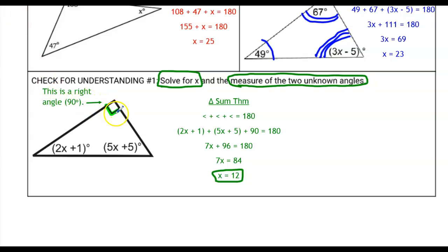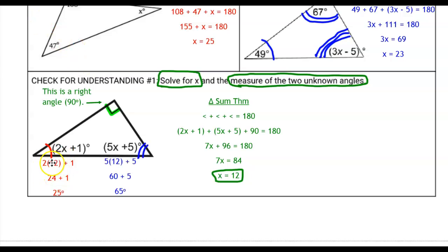Keep in mind that since this is a 90-degree angle, the two unknown angles must add up to 90 degrees, because 90 plus those two equals 180. After substituting x = 12, we get 25 degrees for one angle and 65 degrees for the other. As a quick check: 25 plus 65 is 90, plus the other 90 is 180. It always works.